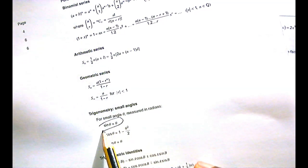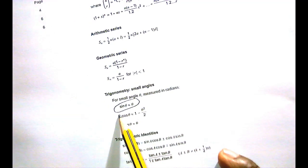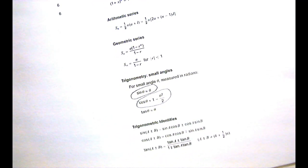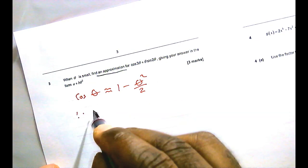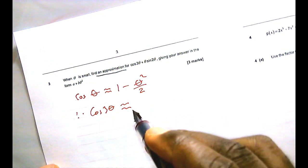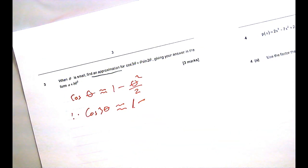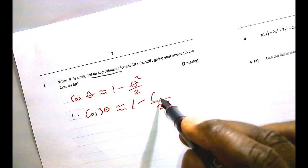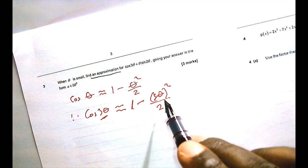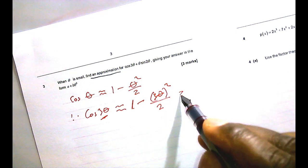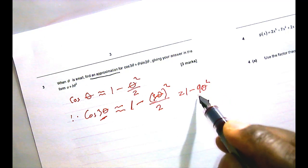The formula sheet says sin theta can be approximated as theta, while cos theta can be replaced as 1 minus theta squared over 2 — that's from the formula sheet on page 4. So using that knowledge, cos 3 theta is approximately 1 minus (3 theta) squared over 2, because whatever was theta gets squared and divided by 2. But rather than having theta, what I have is 3 theta, so that's (3 theta) squared, which gives 1 minus 9 theta squared over 2.